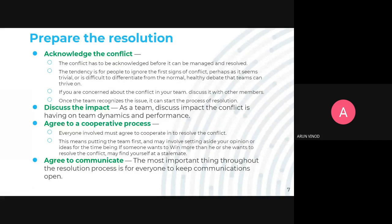Agreeing to a cooperative process means putting the team first, which may involve setting aside your own opinion. Each member should think of the team as the priority; opinions come second. You should not impose your individual opinion on the team. Finally, agree to communicate — everyone must keep communicating. If only five out of ten members speak, the conflict won't be resolved. Everybody inside the team should communicate.